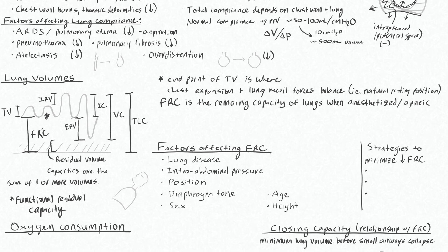You can see that the FRC is the capacity or the volume of air left in the lung at your resting point. So under anesthesia, when you're anesthetized and apneic, the FRC is the volume of air that remains in your lungs, since this is the natural resting position of the lungs when you're relaxed.